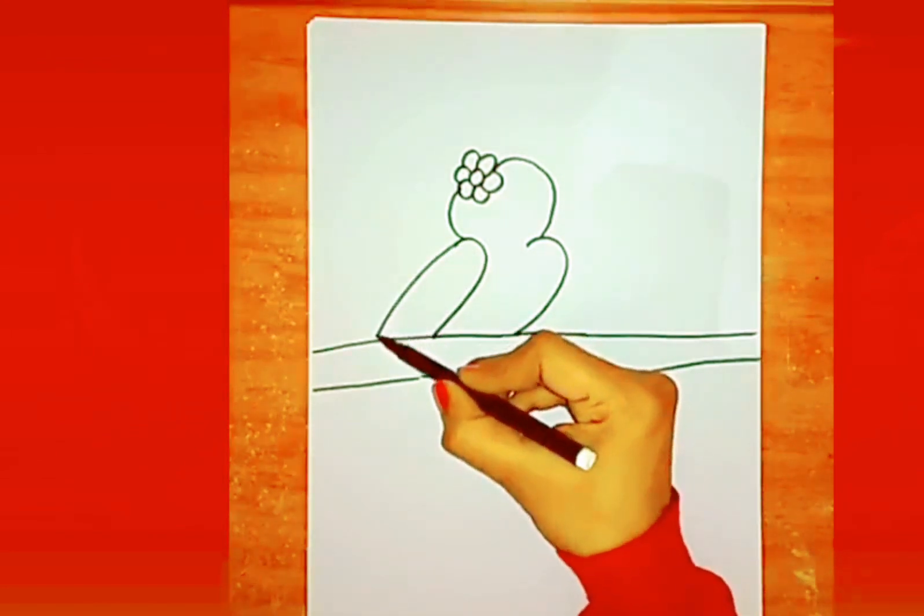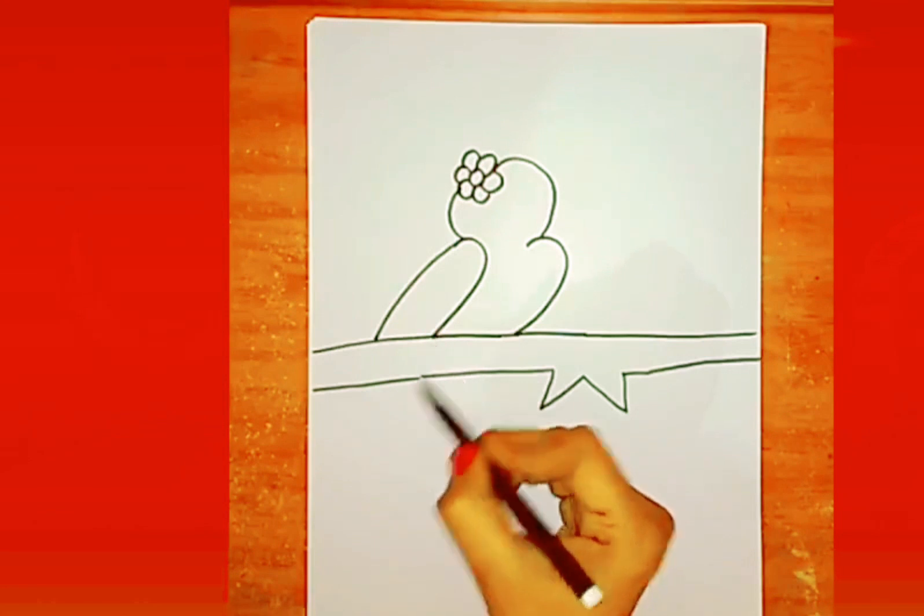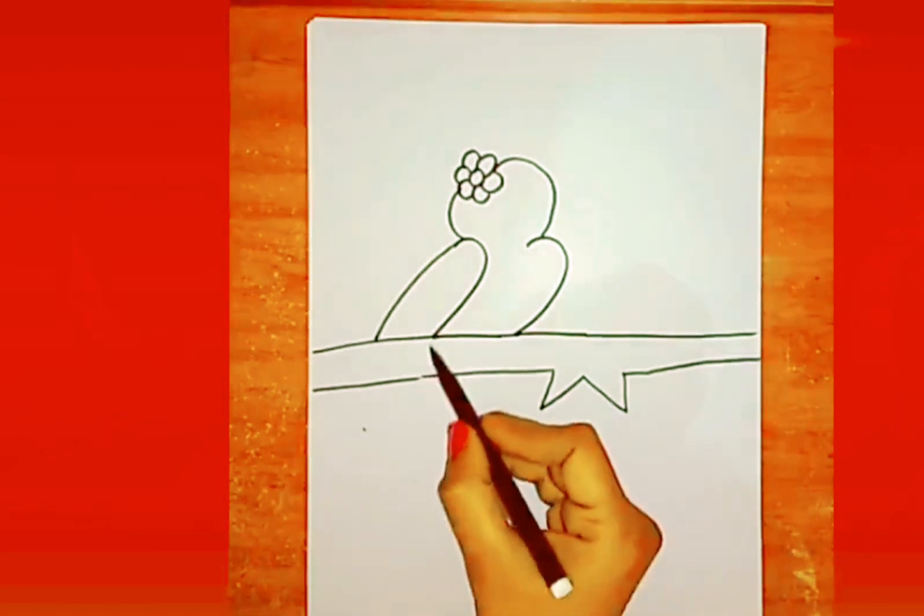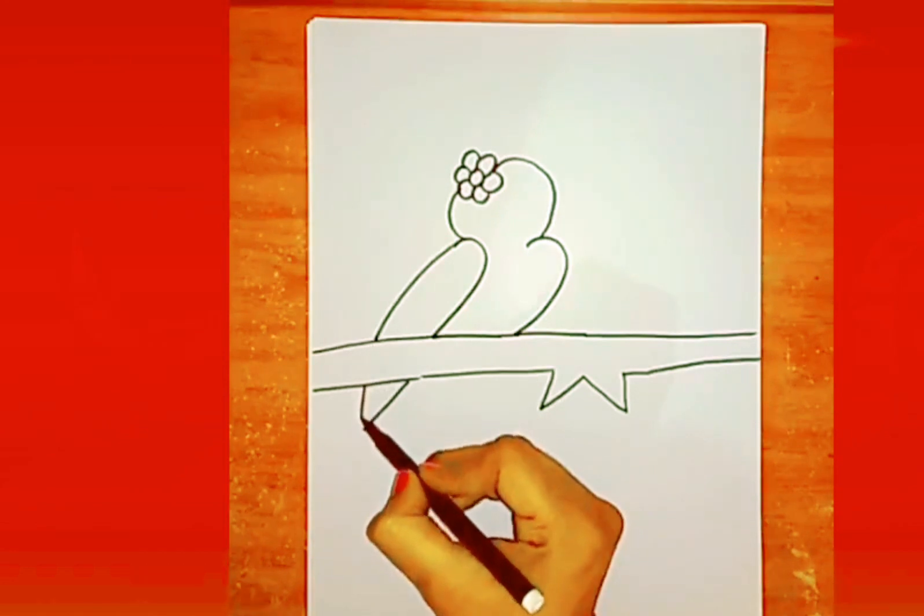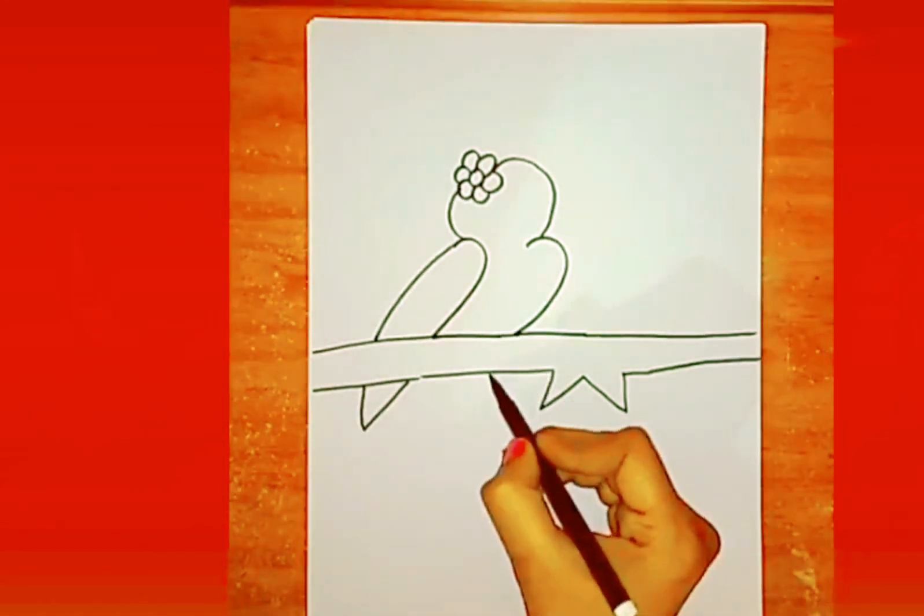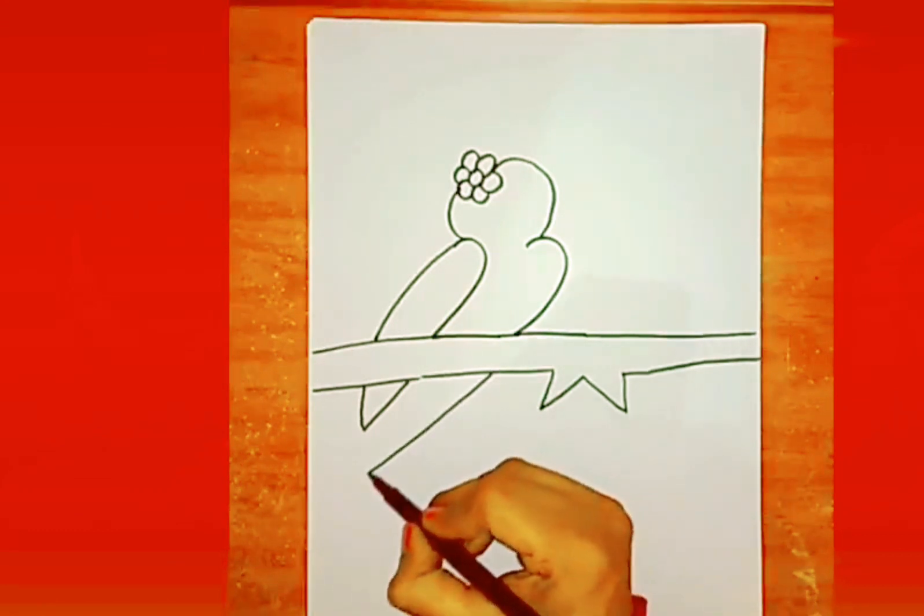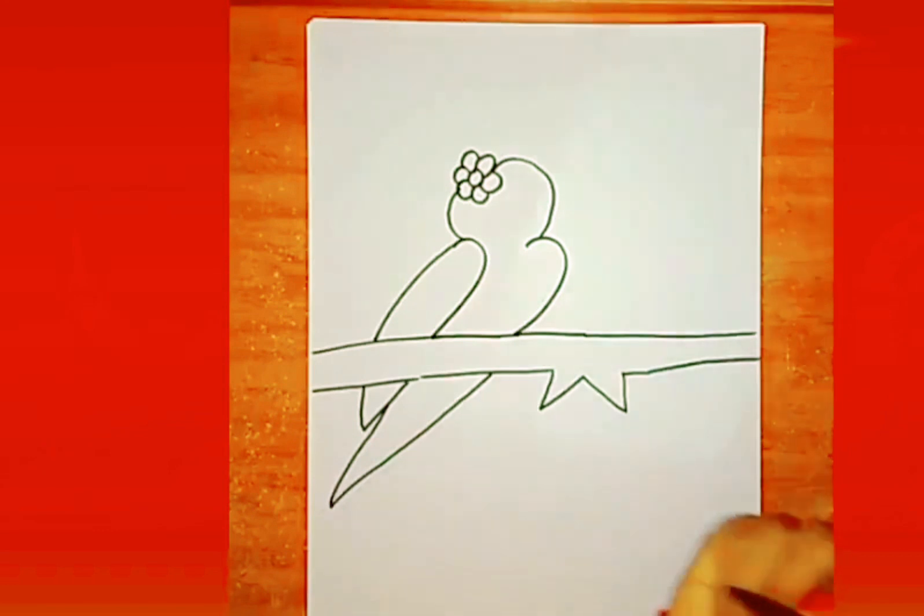Now extend the number 2 below to make its feather. Try to draw as shown in the picture. Now extend it in a pointed edge. Now extend the other lines to complete the feathers.